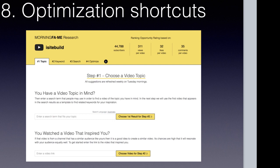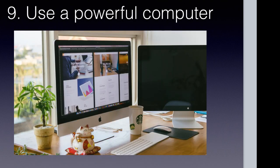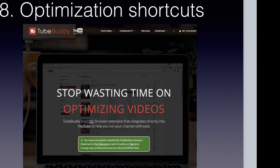TubeBuddy is a great keyword research tool. It'll look at your competitors' tags so you can use some of those, and it gives keyword suggestions. With Morningfame, you get even more tag suggestions. These are two great tools I highly recommend. TubeBuddy has a free Chrome extension with an optional paid upgrade, and Morningfame is about $12 a month.